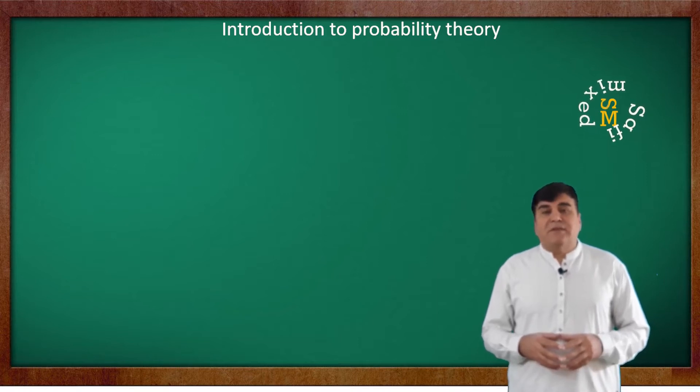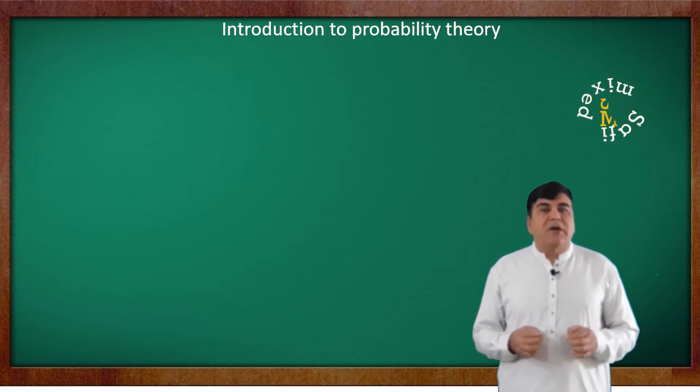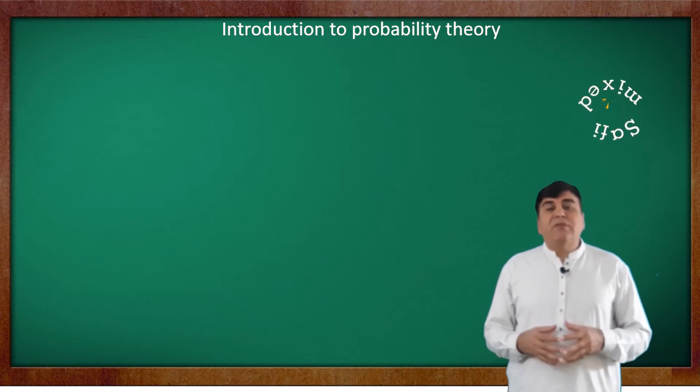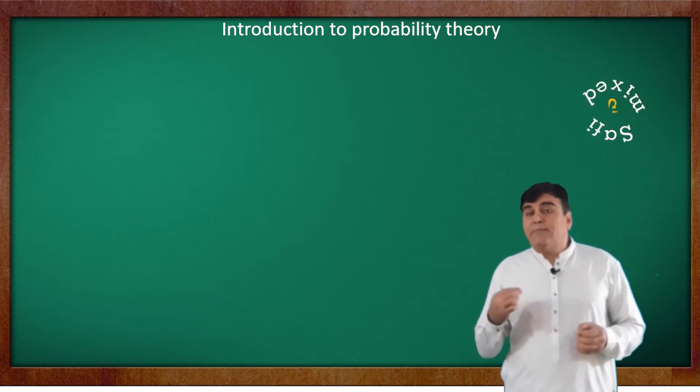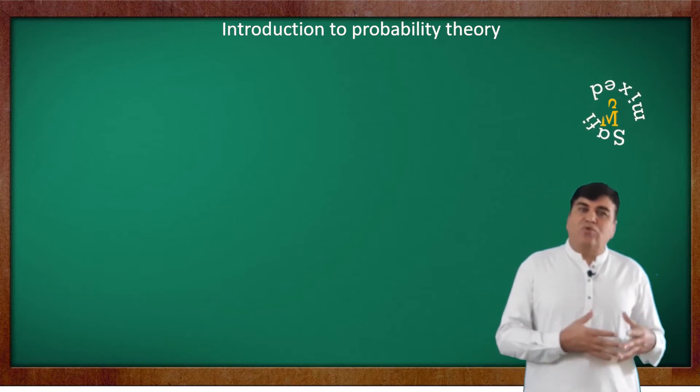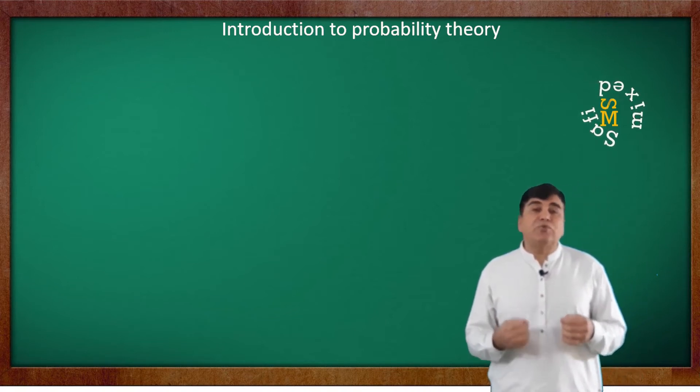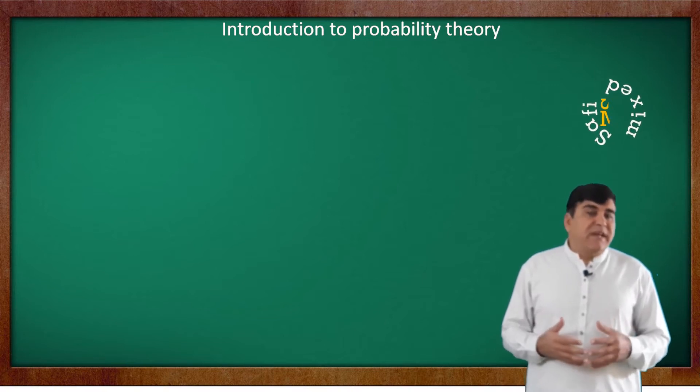The next thing is to know about a sample space. The possible outcomes of an event constitute what we call a sample space. For example, tossing up a coin is an event with two possible outcomes. The rolling of a dice is an event with six possible outcomes, and playing of a cricket match is an event with two possible outcomes.